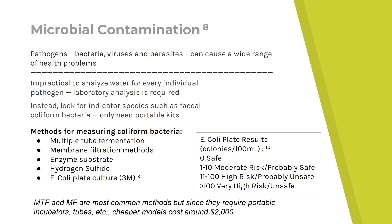It's impractical to analyze water for every individual pathogen, so we either look at main contaminants like E. coli or indicator species such as fecal coliform bacteria. For measuring coliform bacteria, there are more accurate methods such as multiple tube fermentation or membrane filtration, but these require very specialized incubators and tubes — even the cheaper portable kit models can cost around two thousand dollars. A cheaper but more limited test is to test for E. coli with plates: take approximately 100 milliliters of water, swish it around the disc, incubate at around body temperature for one to two days, then count the colonies per 100 milliliters of water.